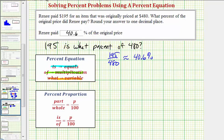So referring back to our question, we have 195 is, which means 195 equals. Then we have what percent, which represents the unknown, which in this case is going to be a percent. Let's use the variable p, and then we have of 480, so we have times 480.